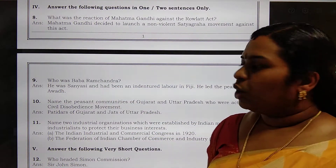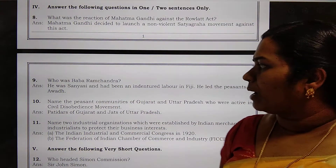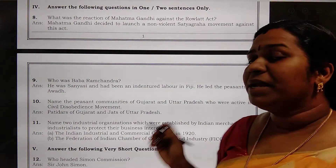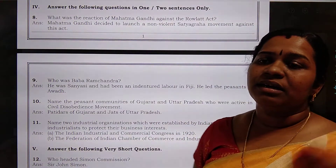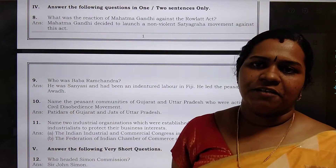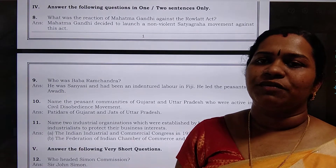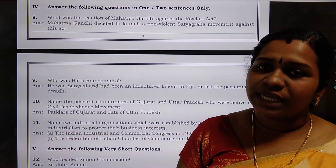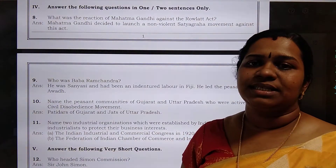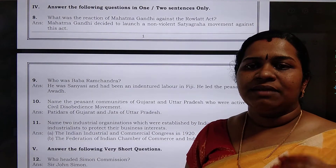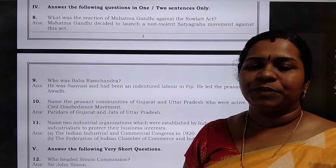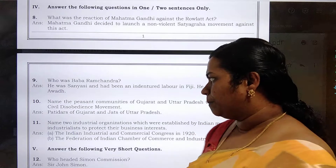Ninth question: who was Baba Ramachandra? Baba Ramachandra was a sanyasi who had been indentured to Fiji. He led the peasant movements in Awadh. He was one of the founders of Awadhikishan Sabha along with Jawaharlal Nehru. He was basically a sanyasi who, from India, was sent to Fiji as an indentured — that is, bonded — laborer.